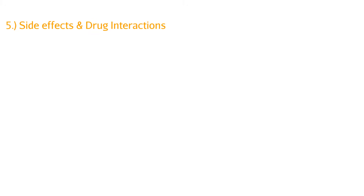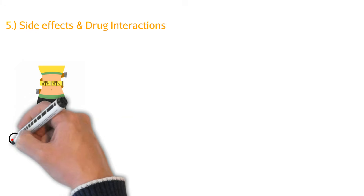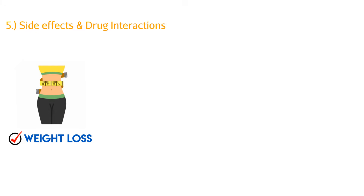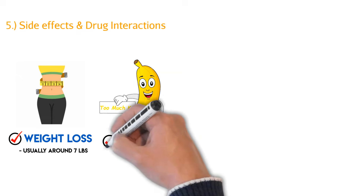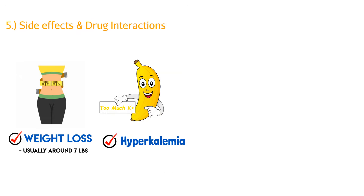Let's talk about side effects of SGLT2 inhibitors. The first is weight loss — patients starting this medication typically see 5–7 pounds of weight loss, which is beneficial since type 2 diabetic patients are often overweight. The next side effect to watch for is hyperkalemia, because these medications work on the kidney and can alter the concentration of substances being absorbed and reabsorbed, leading to increased potassium in the blood. This can be dangerous, so it's something to monitor.